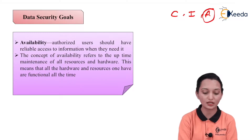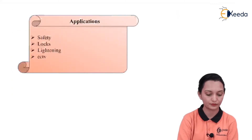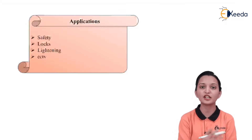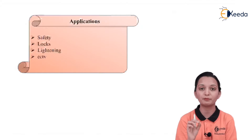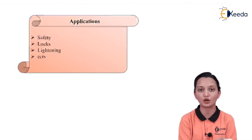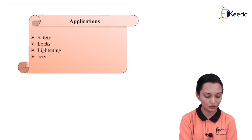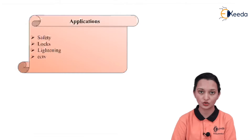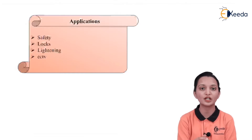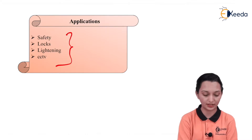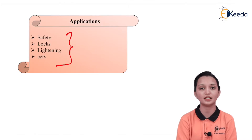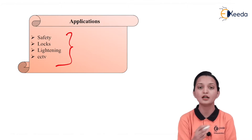There are three main basic concepts of data security goals known as confidentiality, integrity, and availability. The applications of these data goals include QR code scanning at every shop, web page browsing with the help of the internet, copyright for a particular page — these are applications of data security. Along with that, safety locks, lighting, and CCTV are also applications of data security. Nowadays we use data security goals especially for such kinds of applications, and we can add day-to-day-life applications to this list. Hence we use CIA — confidentiality, integrity, and availability — with the help of data security.